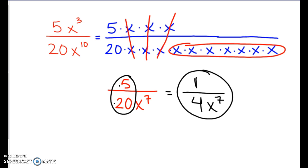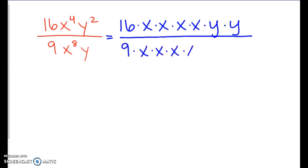Alright, let's do another one. Now notice here we have two different variables. We have x's and we have y's. I'm going to again write it out in expanded form. So we have 16 times 4 x's and then there's 2 y's up on our numerator. And then we have 9 and we have 8 x's and we have 1 y.